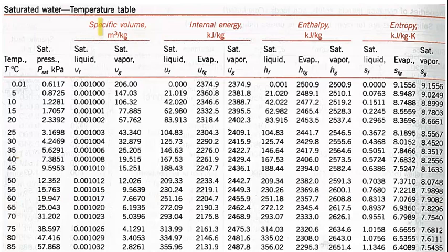There's a lot of information in each of these tables. The first would be the specific volume in cubic meters per kilogram. Then internal energy, or U, in kilojoules per kilogram. Then enthalpy, variable H, again in kilojoules per kilogram. And entropy, the variable S, in kilojoules per kilogram Kelvin.